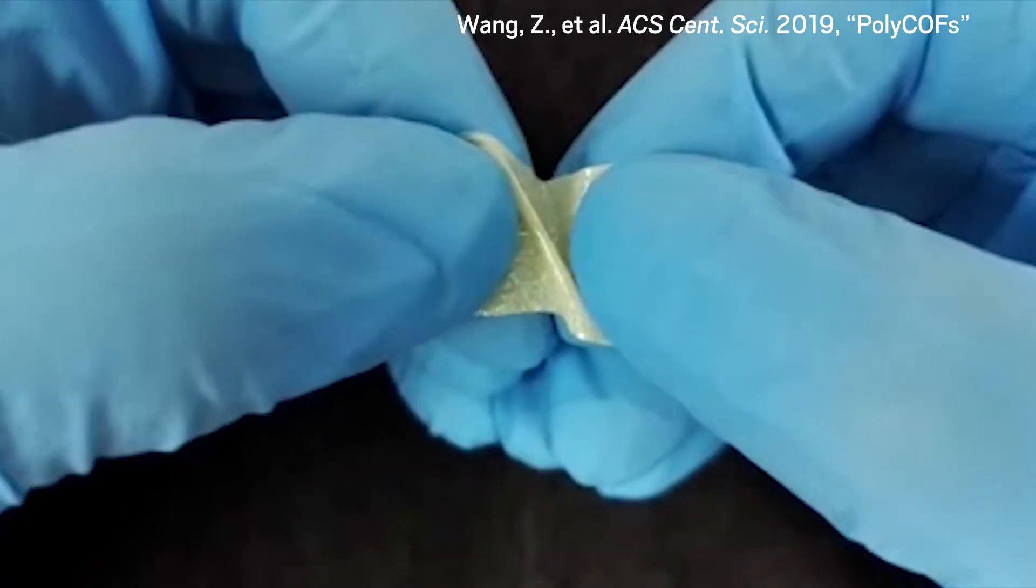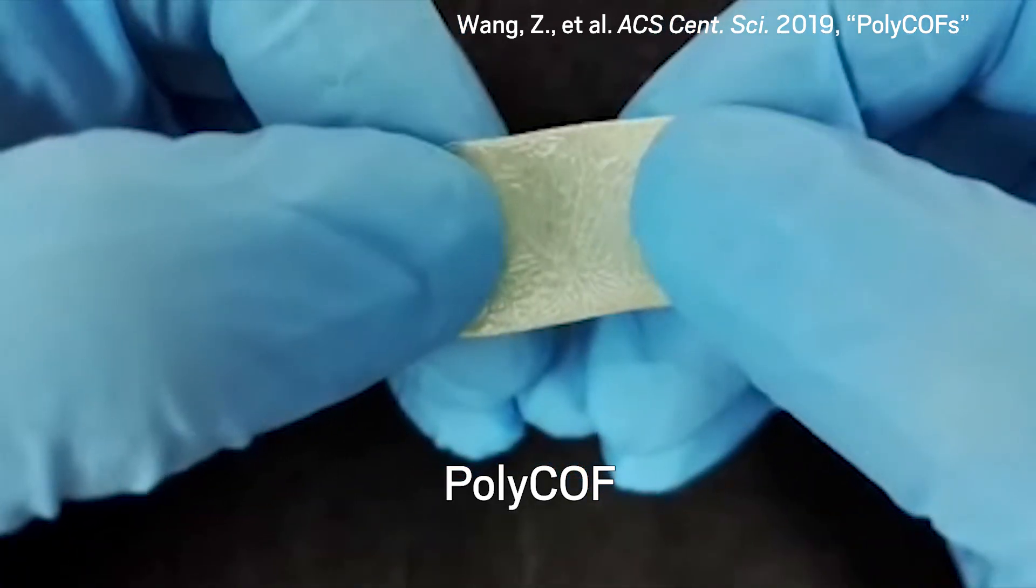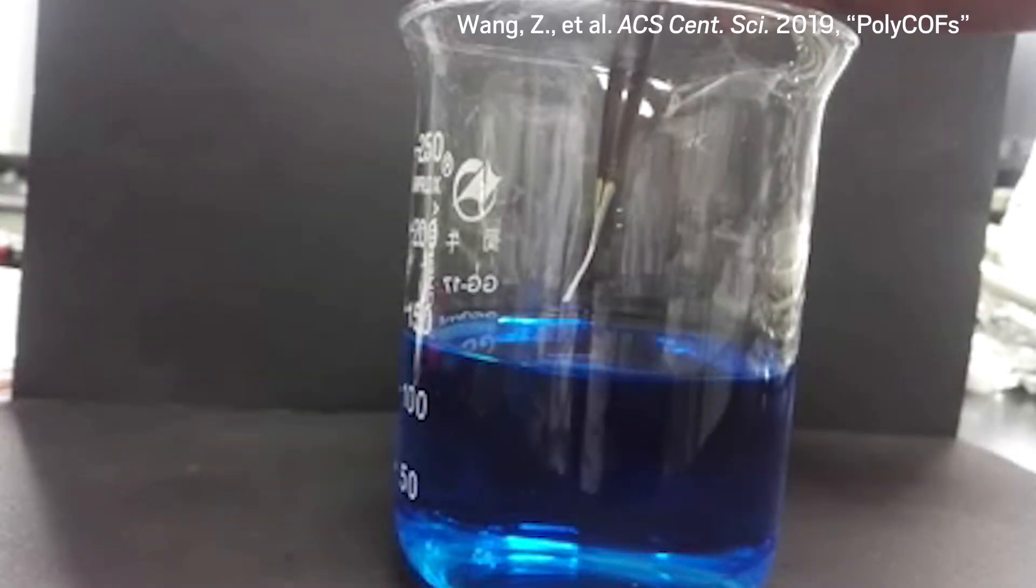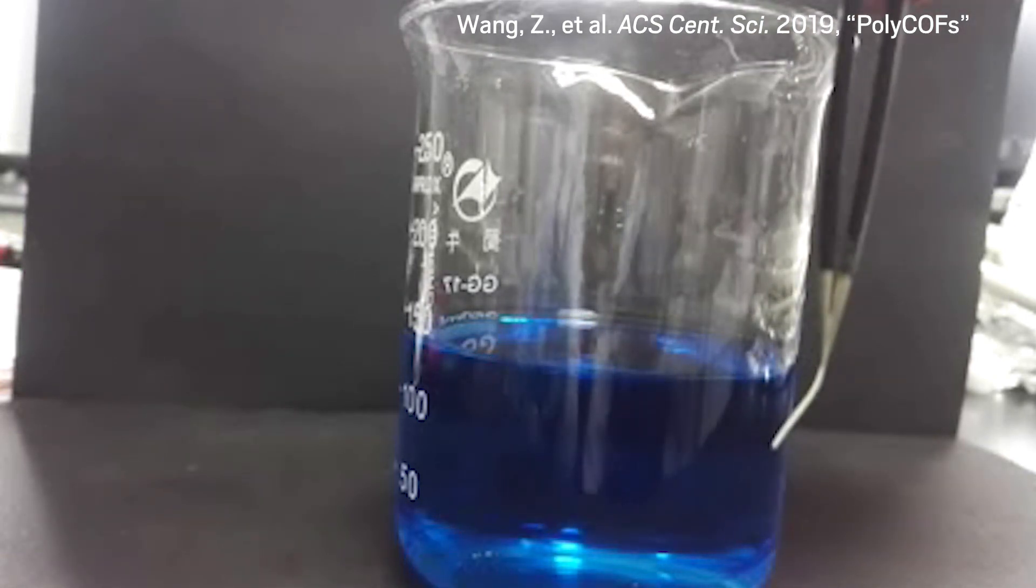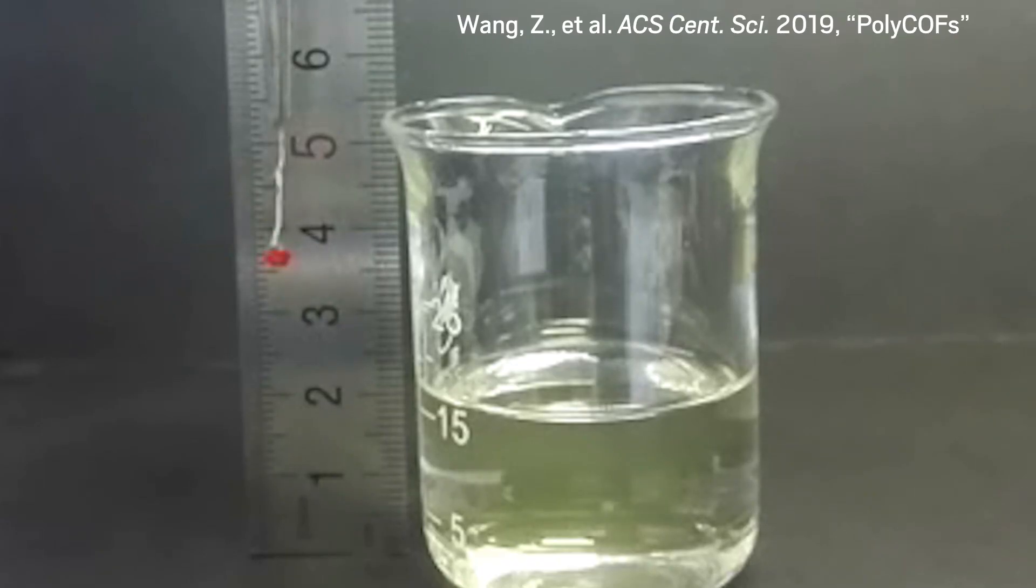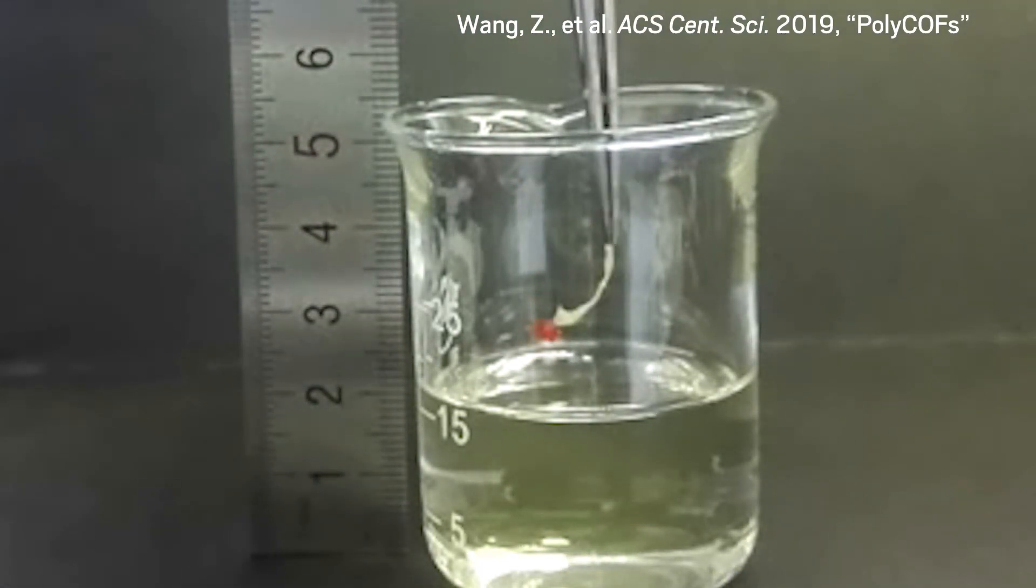The final material, which the researchers have named polyCOF, combines the porosity of COFs with the strength and flexibility of polymers. And the polyCOF boasts another ability. It bends when it absorbs vapors of organic solvents, like ethanol. When removed from the vapors, the material flattens. The researchers demonstrated how this mechanical ability could be used to curl up and lift small objects.